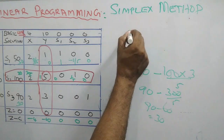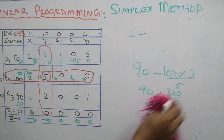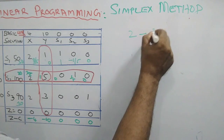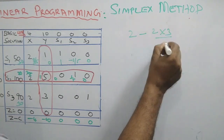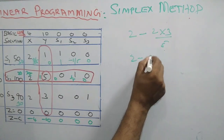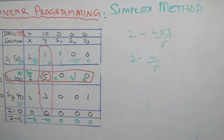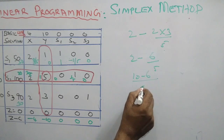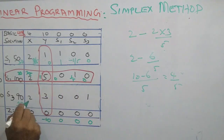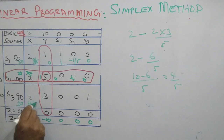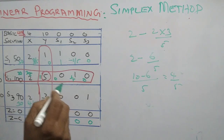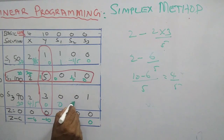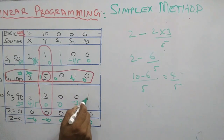Similarly: 2 minus the corresponding number in the pivot row 2, into 3 by 5 — that is 2 minus 6 by 5, which is 10 minus 6 by 5, equal to 4 by 5. This number is 4 by 5. Then 0 minus 0 into minus 3 by 5, and 1 minus 1 equals 0.